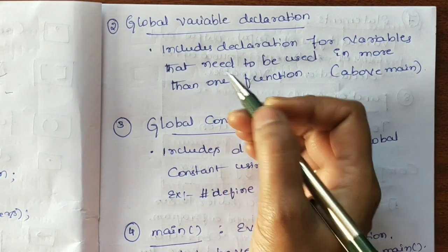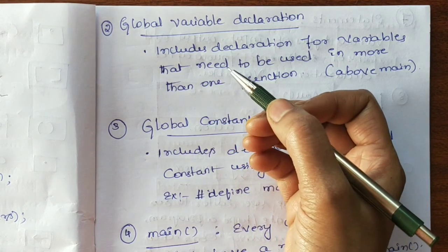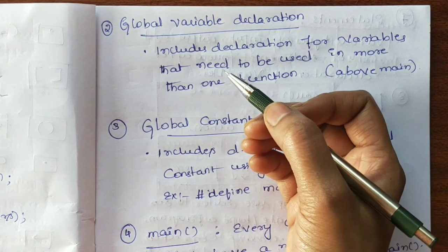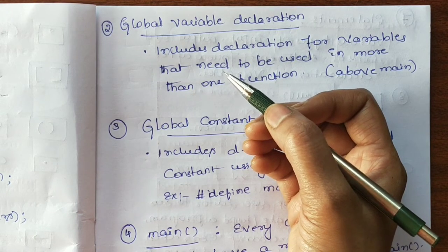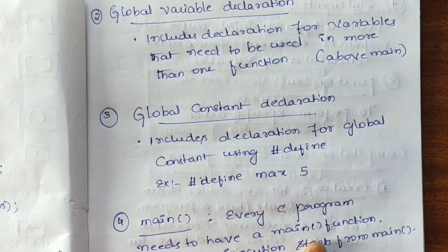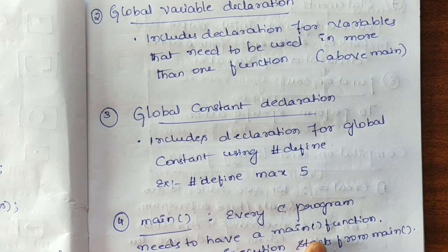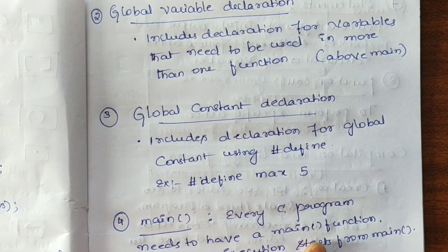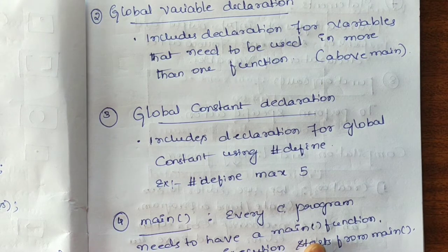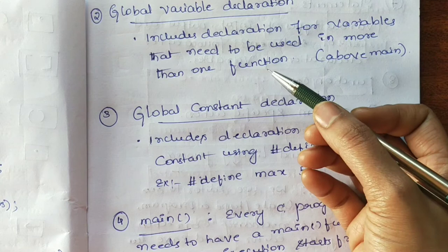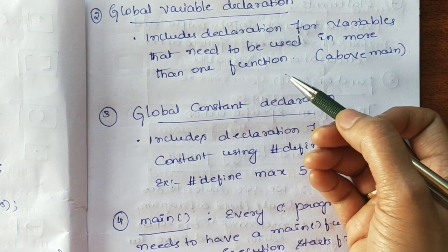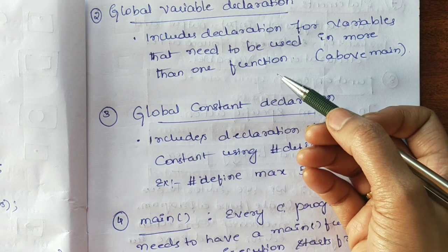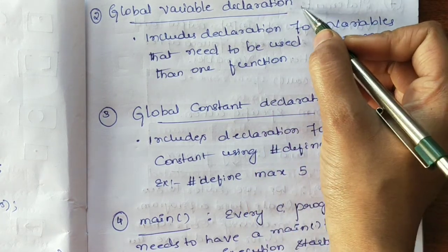The next part of the program structure is global variable declaration. Global variable declaration is nothing but normally we declare some variables. Suppose we are finding the area of some geometrical shapes — the area of the triangle, rectangle, and other geometric shapes. I need to declare some common variable. That kind of variable is called a global variable, which can be used by all the functions in our program. It is normally declared before the main function.